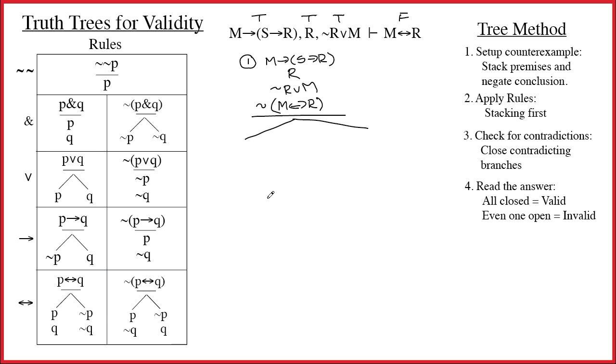Now we're using the rule for the arrow. It says, negate the antecedent. So I'm going to put tilde M on one side, and that says just put Q on the other side. All right, so put S arrow R over there. I just applied the rule for the arrow to line one.